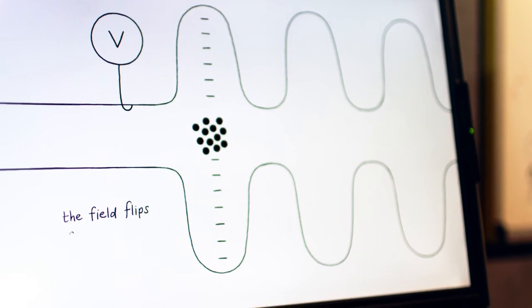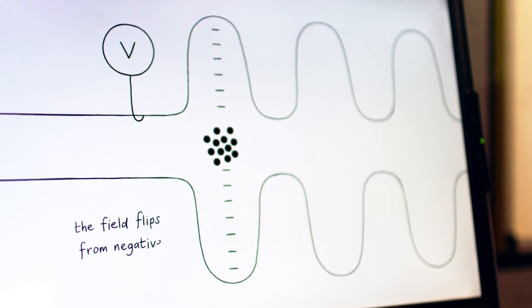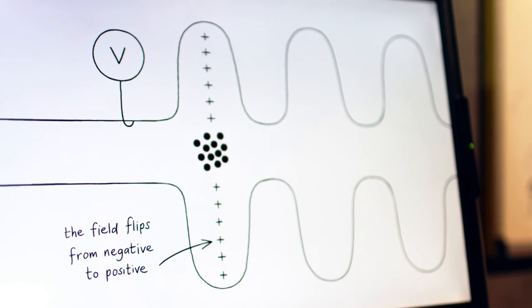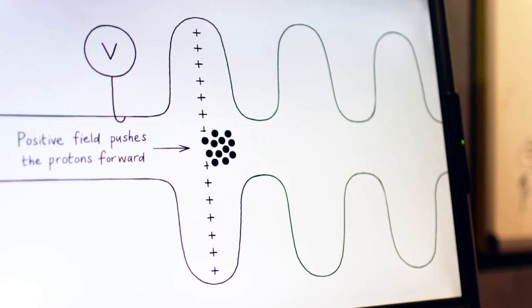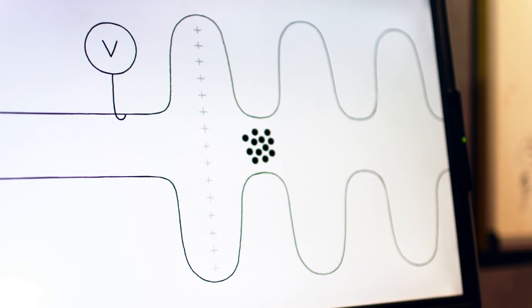Then the field switches and we get a positive field, and that will then push the particles through. That happens a few times in the accelerating area to give them more energy as they go through.